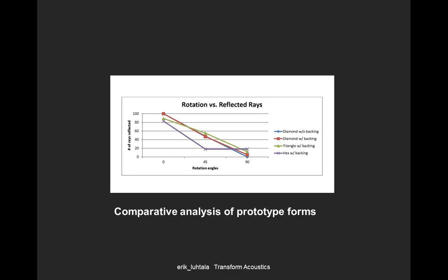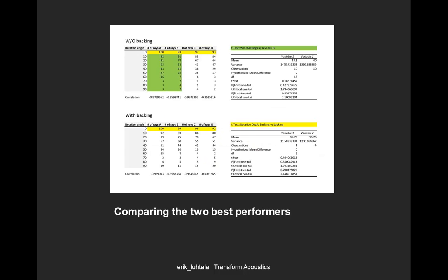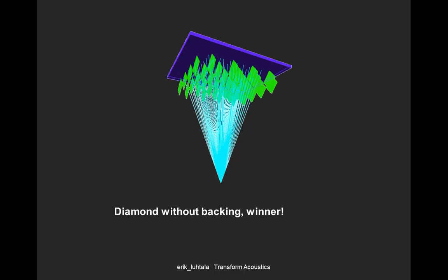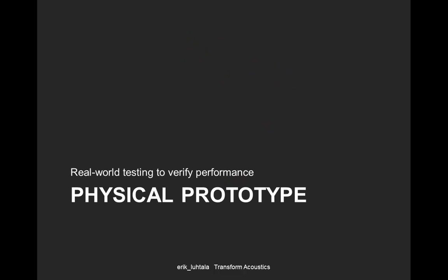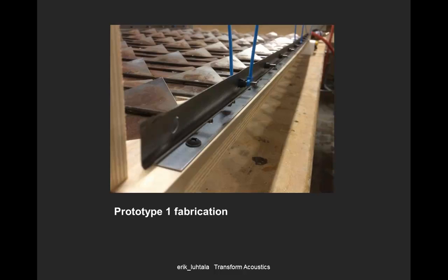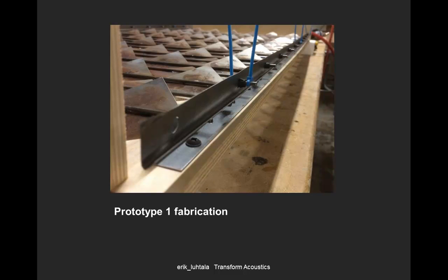After running all the tests and looking at the data, the diamond panel without backing and the diamond panel with backing were actually performing really well. Running more precise tests at specific angles, interestingly, the panel without backing tended to outperform the one with acoustic absorber material backing. So I used that to conclude: diamond without backing is the winner. The great thing was I was able to take what would have been physical prototypes taking months of acoustic testing — turn it five degrees, test again — and instead run it through the parametric engine in a matter of hours.